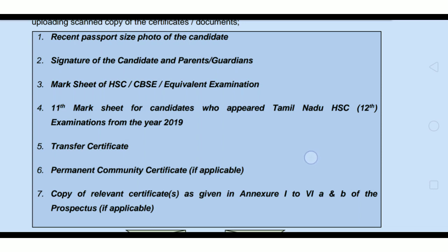These documents are required: Recent Passport Size Photograph, Signature, Mark Sheet, 11th Mark Sheet, 12th Mark Sheet, Transfer Certificate, Permanent Community Certificate, First Graduate Certificate, Nativity Certificate, Special Category, 7.5 Reservation, X-Serviceman, Sports Certificate. This is the annexure — you will see Special Category Certificate, First Graduate Certificate, Nativity Certificate.